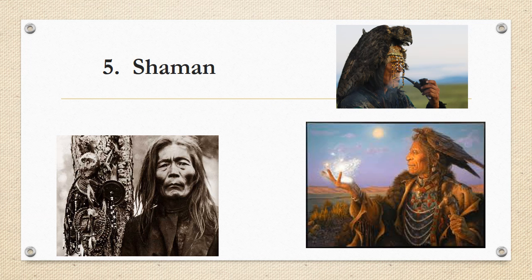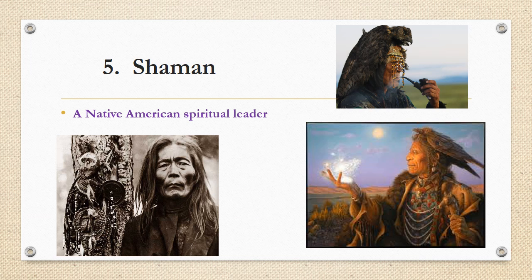Number five is a shaman. Those are a little bit intimidating pictures, I know. But the shaman was a Native American spiritual leader. A lot of times he was part of a religious ceremony and also was the medicine man, giving medicine to those who might have been sick.